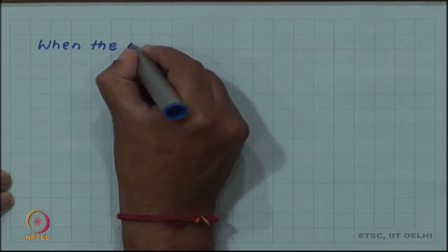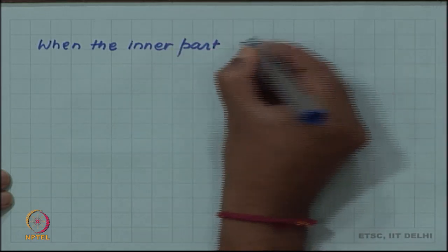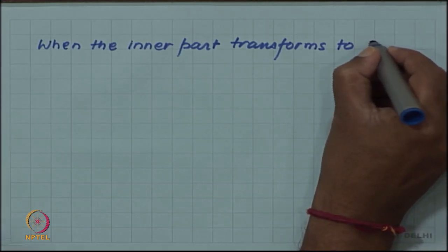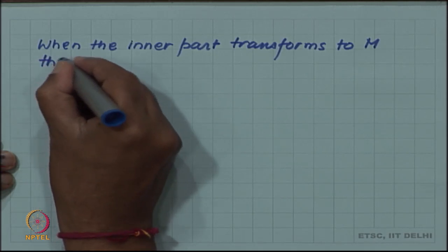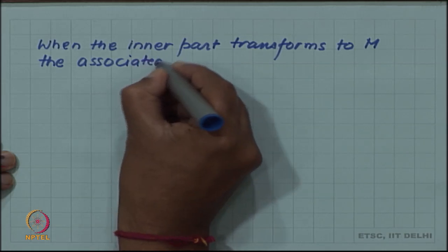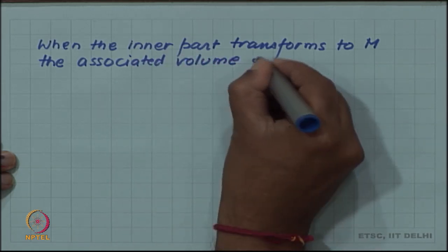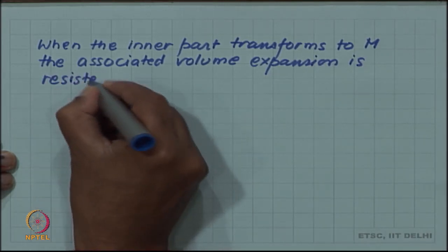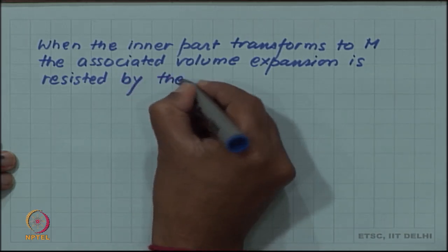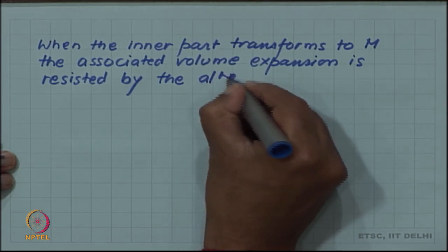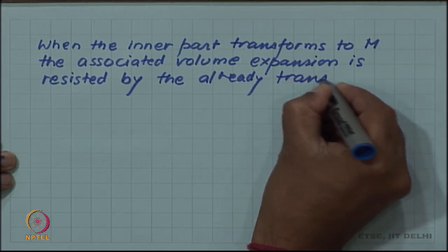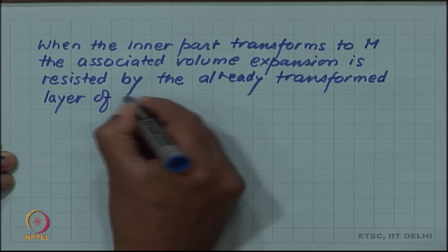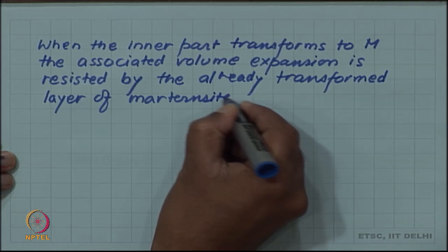There will be a resistance for this expansion leading to stresses. So when the inner part transforms to martensite, this volume expansion is resisted by the already transformed layer of martensite on the outer surface.